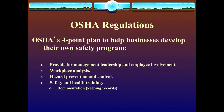OSHA's four-point plan to help businesses develop their own safety program includes: providing for management leadership and employee involvement, conducting a workplace analysis — which is what we are going to see today — having hazard prevention and control, and having safety and health training.